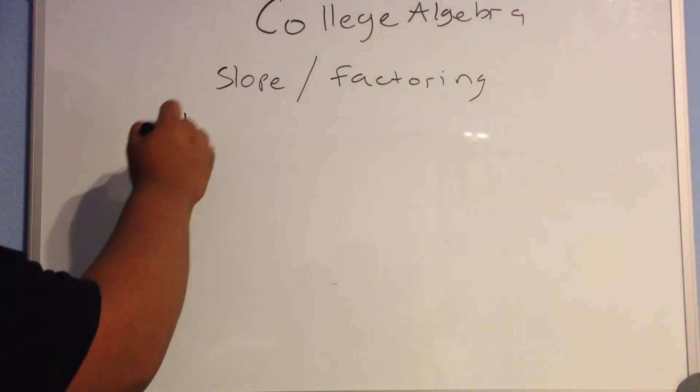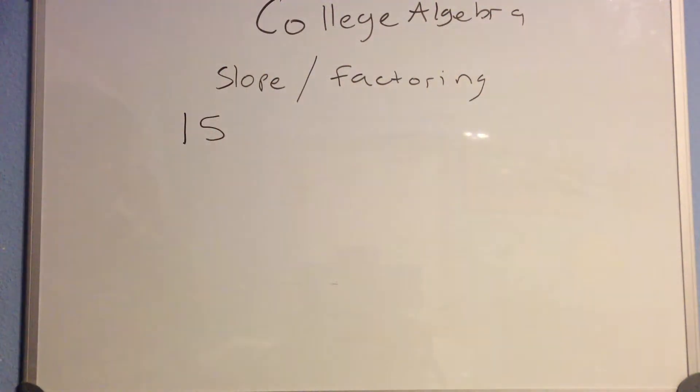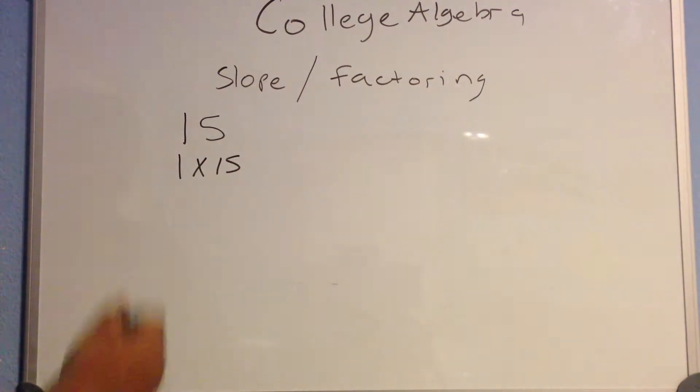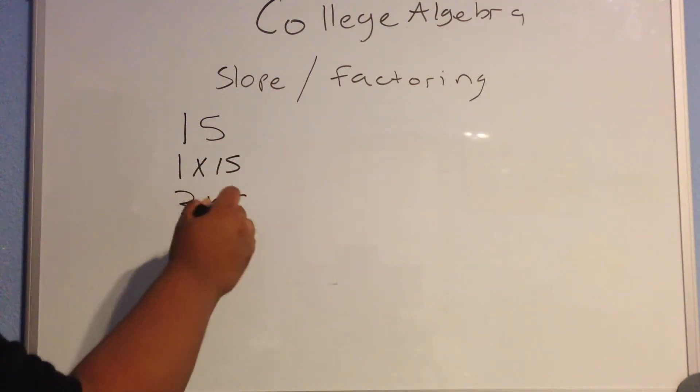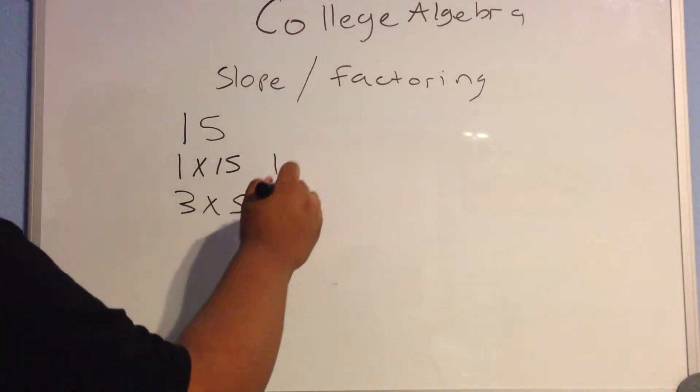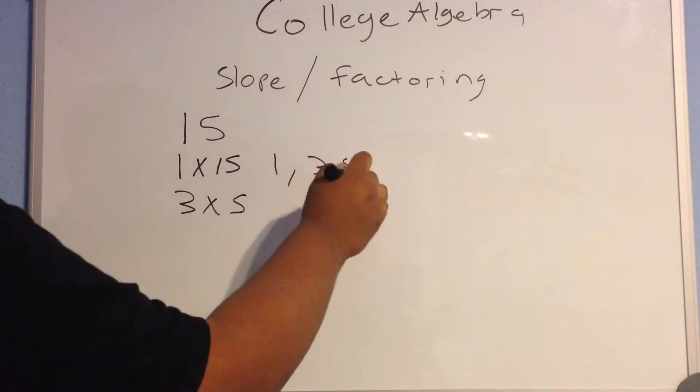Let's get the factors of 15. The factors are basically the numbers you multiply in order to get that specific number. The factors of 15 would be 1 times 15, and 3 times 5. Those equal 15. Essentially, your factors are 1, 3, 5, and 15.